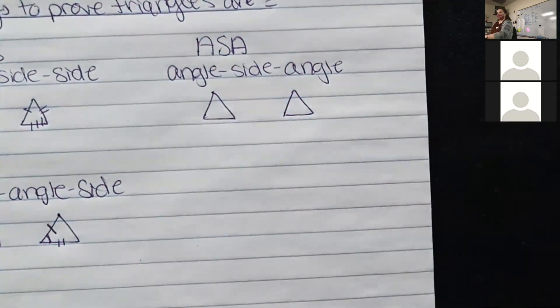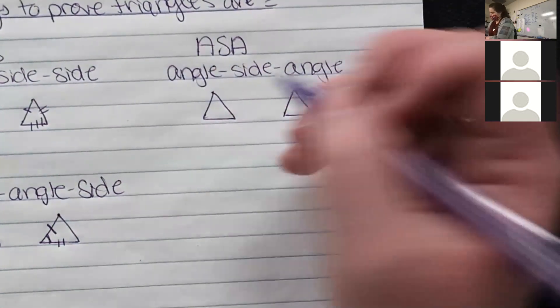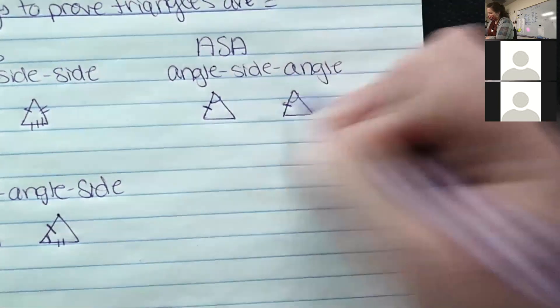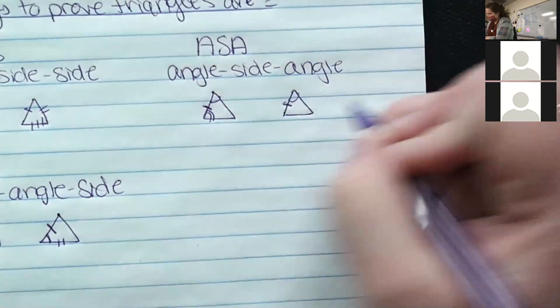You have an angle, then the side that's in between it, and then the other angle. So they have to be with each other.